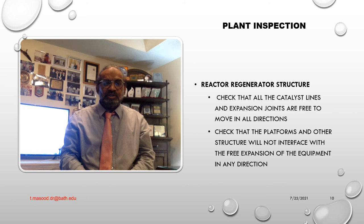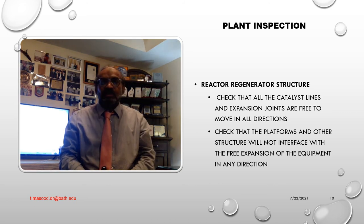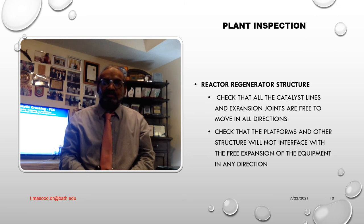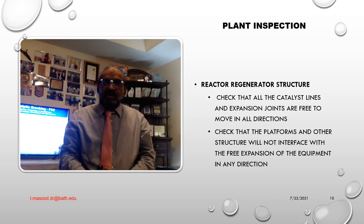Reactor-regenerator structure — this is the last slide. Number one — check that all the catalyst lines and expansion joints are free to move in all directions; be sure shipping stops are removed on the expansion joints. Number two — check that the platforms and other structures will not interfere with the free expansion of the equipment in any direction. Number three — check that instrument piping, electrical conduit, hydraulic piping, and other equipment are in no danger of binding.